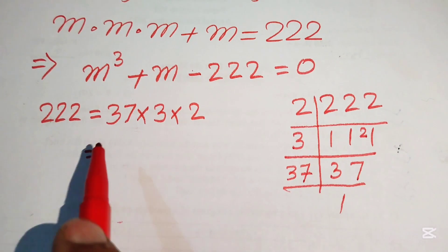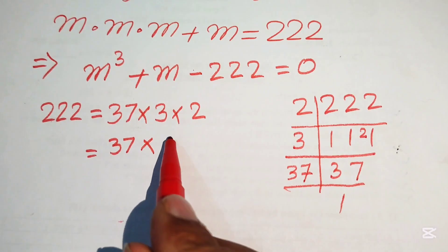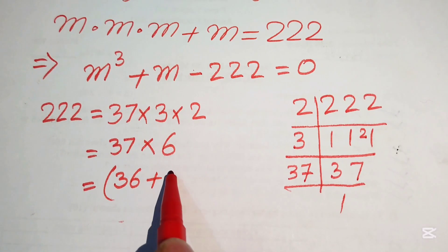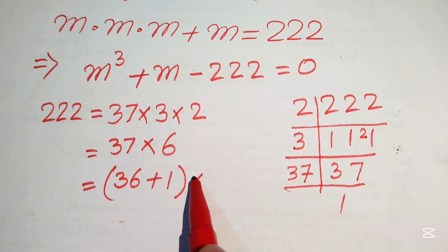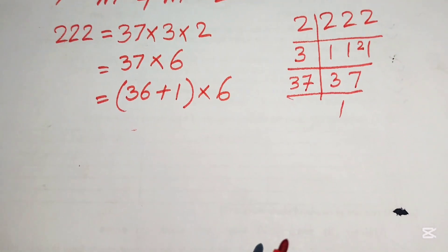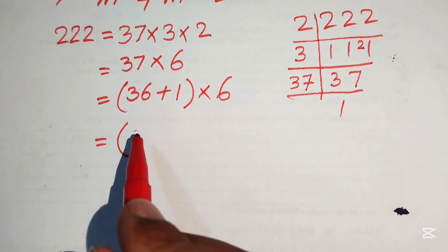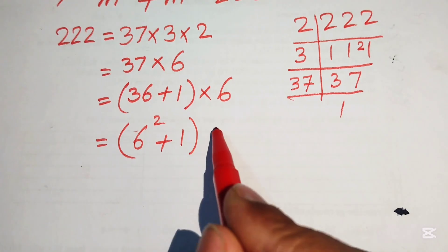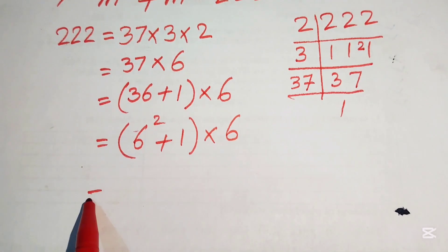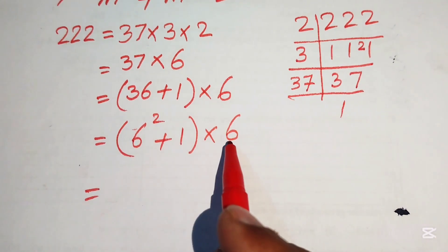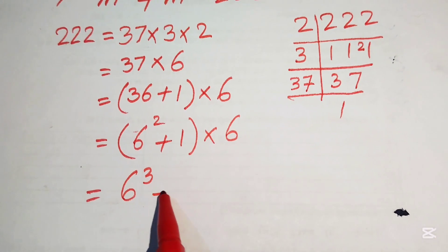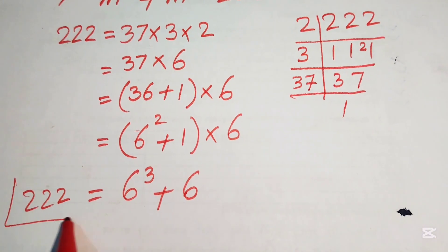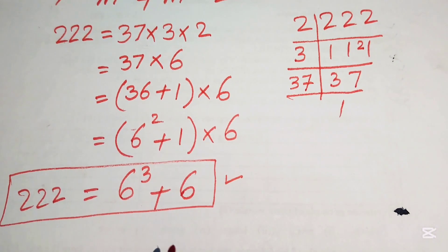We rewrite 222 as 37 × 6. Then we break 37 as 36 + 1, and write 36 as 6². Multiplying through by 6, we get 6² × 6 + 1 × 6, which equals 6³ + 6. So 222 = 6³ + 6.